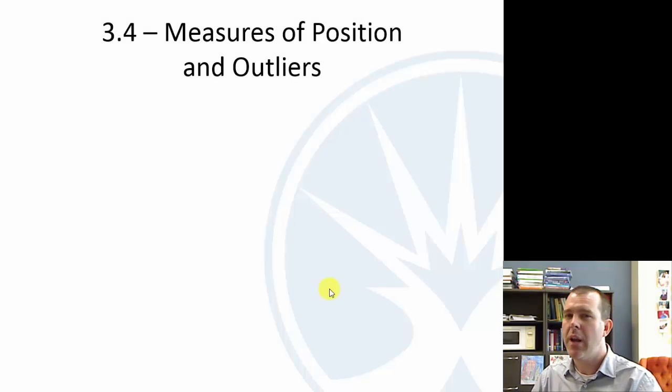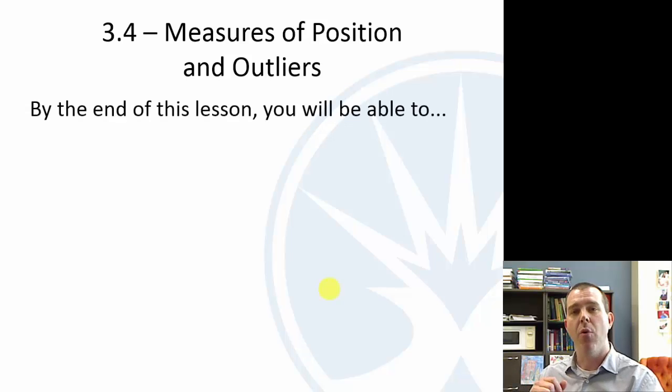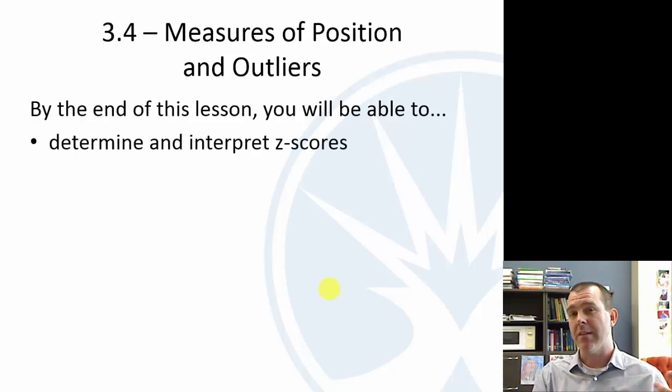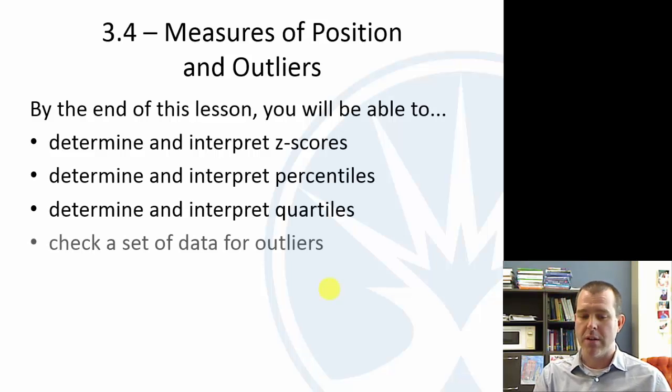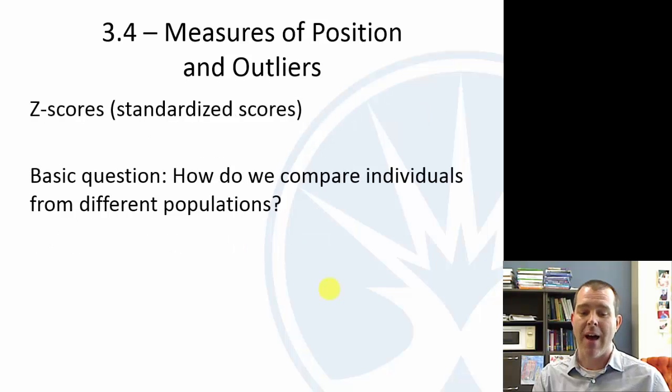All right, the next two sections, we're going to kind of jump back and forth because some of these ideas feel better after we do 3.5. But 3.4 is about position, so where are you in relation to your population, or where is this individual in relation to the population? We've got something called a z-score, percentiles, quartiles, and we're going to talk about how we can find outliers.